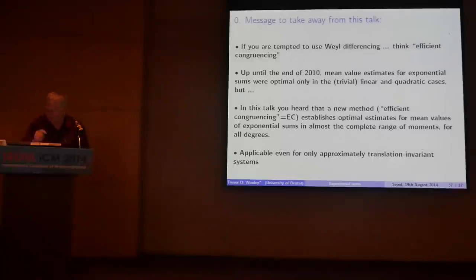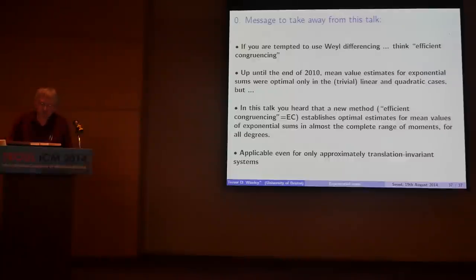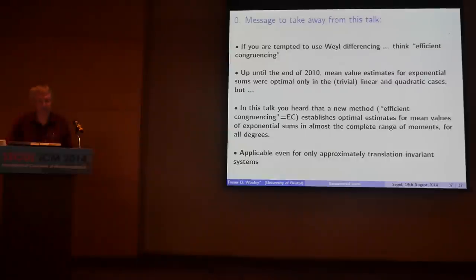My main message is: if you're in a world where you're using Weyl differencing, you should think about efficient congruencing because it's almost surely better, even for small degree. I hope you're convinced that in many situations you get extremely close to the conjectured estimates, which is really very unusual in this kind of subject. We already have optimal estimates for cubic cases and very nearly in complete generality. That's the end of my talk. Thank you.